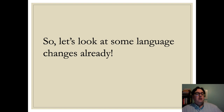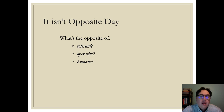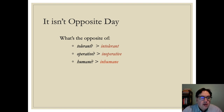So let's look at some examples of language changes. Let's start with this very simple example. Let's think about adjectives. I give you some common adjectives here — words like "tolerant," "operative," and "humane." If we think about those as words, what are the opposites, what are the antonyms for these adjectives? Of course, the simplest way is to think about words like: instead of "tolerant," the opposite is "intolerant"; "operative," "inoperative"; "humane," "inhumane." So notice we have this prefix "in-" (I-N) that is used to mean "opposite" or "not."